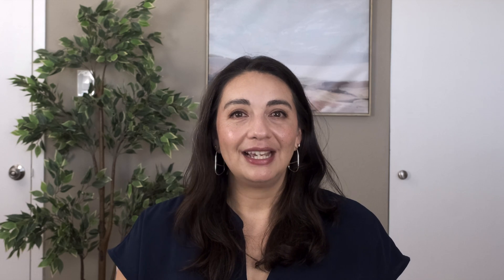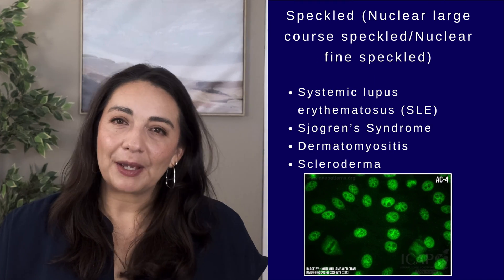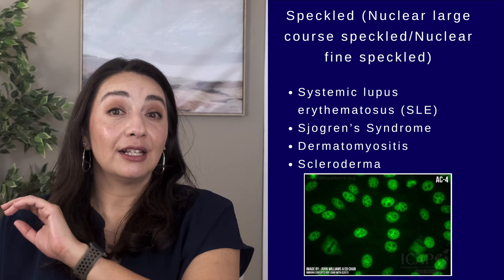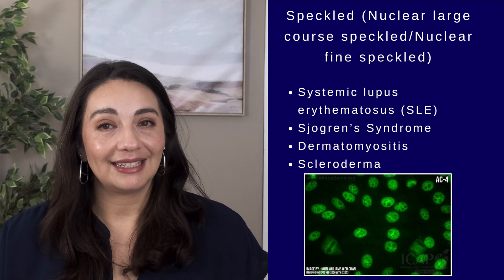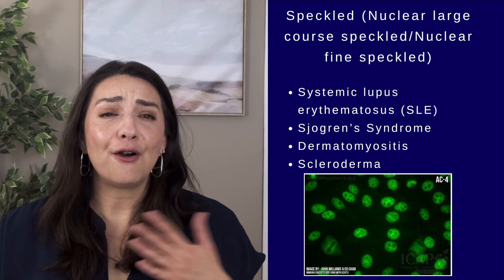The next pattern is speckled. The new nomenclature separates out different types: nuclear large coarse speckled, nuclear fine speckled, and nuclear dense fine speckled. Nuclear fine speckled and nuclear large coarse speckled can be associated with things like lupus, Sjögren's, dermatomyositis, and scleroderma. Again, these are all very different conditions, and the next steps of questioning and testing are really reliant on what any particular person's symptoms are.